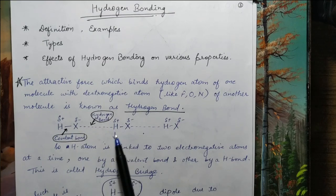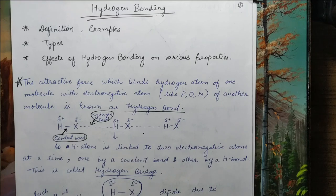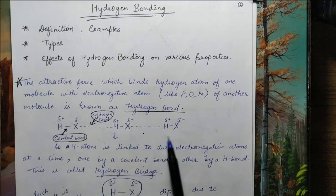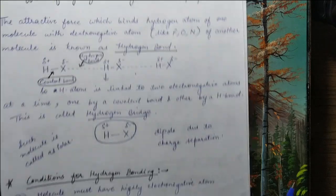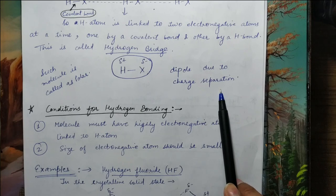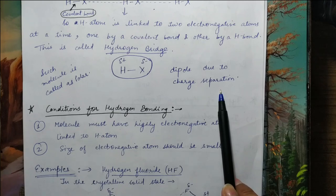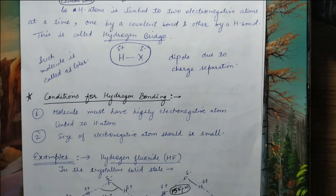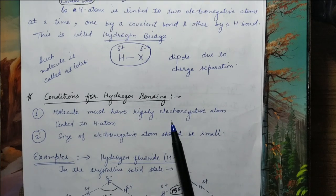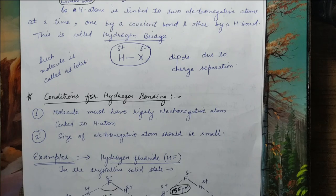These two molecules create a hydrogen bridge. The charge separation — positive and negative end — creates a dipole, which is why it is a polar molecule. If there is no polarity, the charges are not separated and hydrogen bonding will not happen. The conditions for hydrogen bonding are: first, in your molecule you need a highly electronegative atom linked to the hydrogen atom, otherwise polarity will not be created. Second, the size of the electronegative atom should be small. If the size is not small, then there will be a problem.